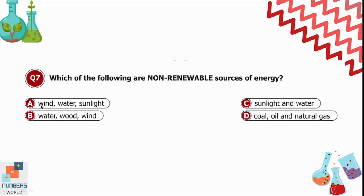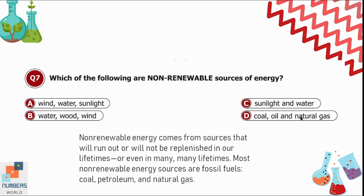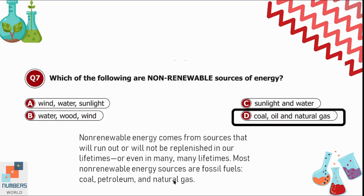Question 7: Which of the following are non-renewable resources of energy? Option A is wind, water, and sunlight. Option B is water, food, and wind. Option C is sunlight and water. Option D is coal, oil, and natural gas. Non-renewable energy comes from sources that will run out and will not be replenished in our lifetimes. Most non-renewable resources are fossil fuels: coal, petroleum, and natural gas. Option D is correct.